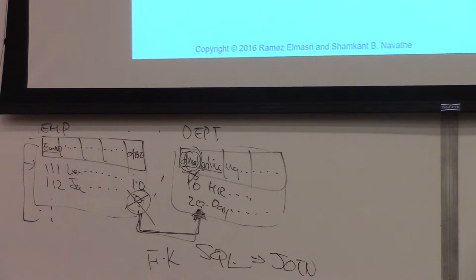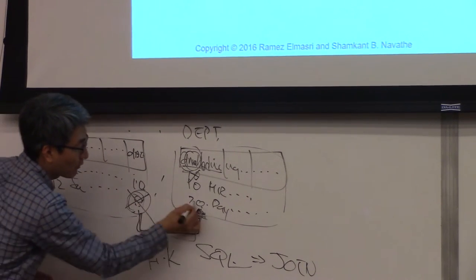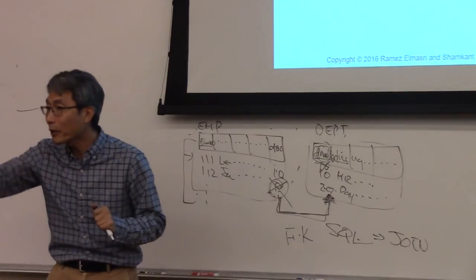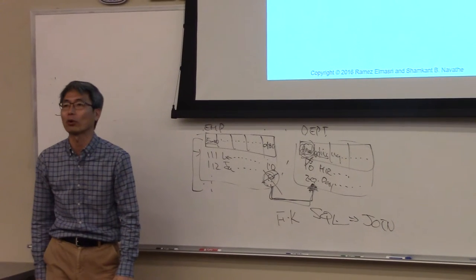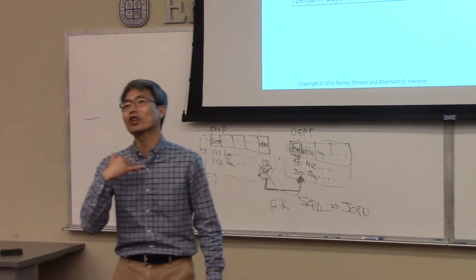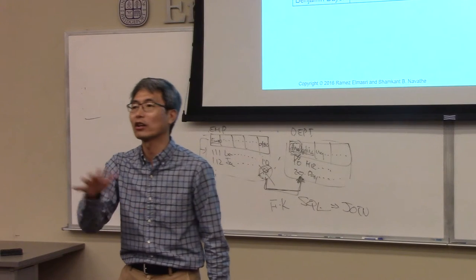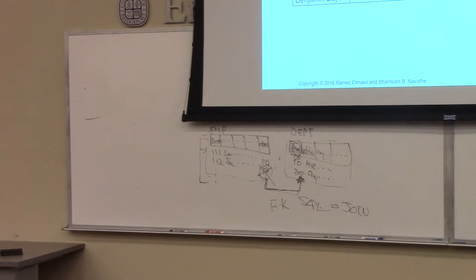A student asks: I never used a foreign key in my previous programming assignment with SQL Server — I just created a customer table with maybe 10 or 20 tuples and there was no problem. Yes, with a small database you can manually check or use code to verify. However, if you had millions of employees, there is no way to check every time. So for a large-scale relational model database, you must use foreign key constraints. Otherwise your data is inconsistent — it becomes garbage or noise data. That is the third constraint.